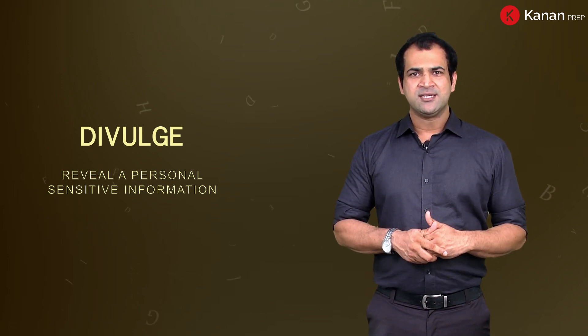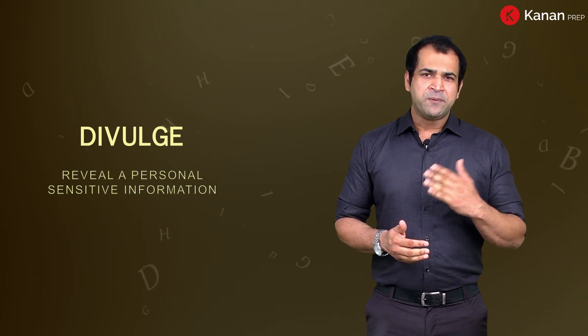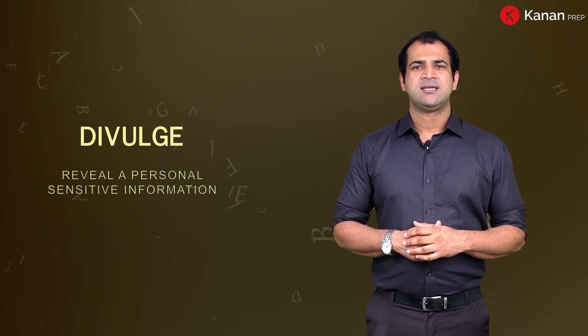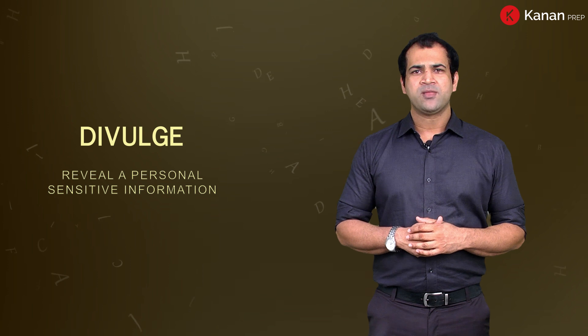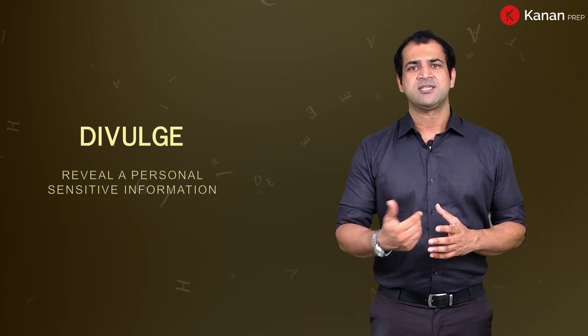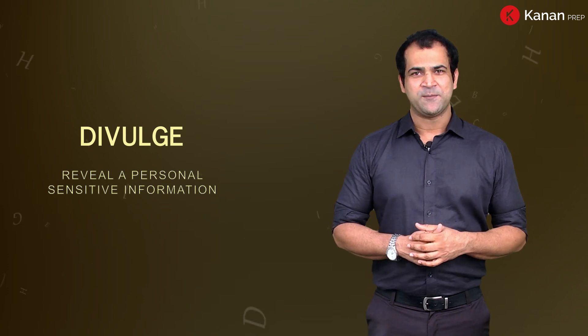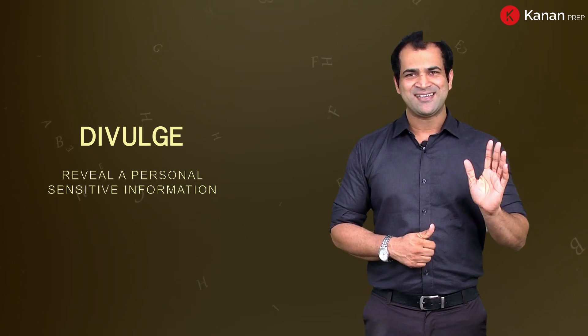The opposite of divulge would be to conceal. The prefix forms for divulge would be: undivulging, non-divulging, undivulged. The suffix forms would be: divulging, divulged. You learned the word today — put this word into use. Until the next word, bye bye!